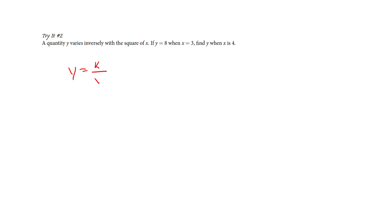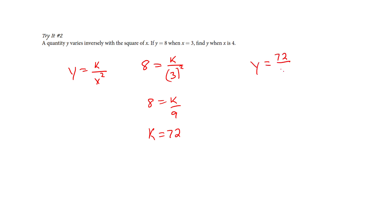Pause it if you want to try this one. y is varying inversely with the square of x, so here's my equation. Let's find the constant of variation: when y is 8, x is 3, so x² is 9. I've got 8 equals k over 9; multiply that up and k is going to be 72. Now I know my constant, so let's plug it in. When x is 3, I get 72 over 9, so y is 8.